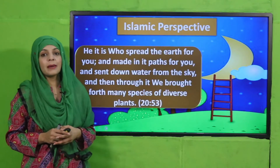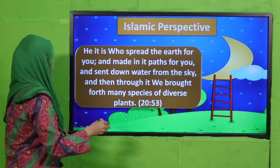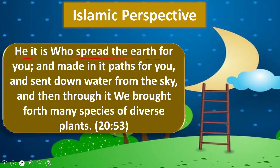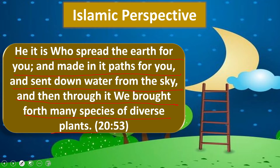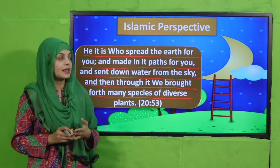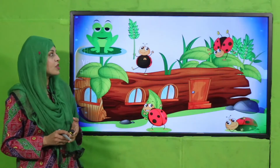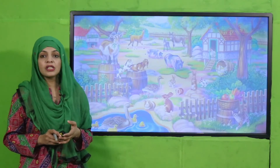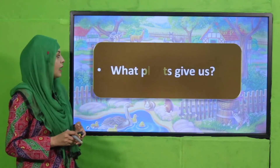Now it's time to look at the Islamic perspective. Allah says in the Quran: 'It is He who spread the earth for you and made paths for you, and sent down water from the sky, and through it We brought forth many species of diverse plants.' Allah Taala ne asmaan se baarish barsayi aur bohut saare paude zameen pe ugaye hain taakke hum unse fayde hasil kar sakein.